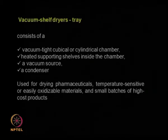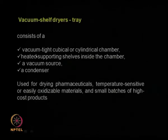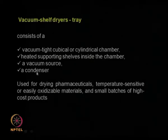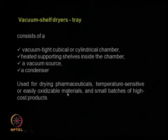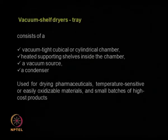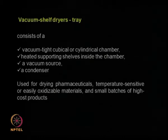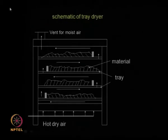Let us look at the vacuum shelf dryer, also called a tray dryer. You have a shelf and many trays inside — the chamber could be cubical or cylindrical. It is maintained airtight because you are applying a vacuum. There is a heating element and a vacuum source, and you need a condenser to collect whatever solvent or moisture evaporates. This is useful for drying pharmaceutical products; even temperature-sensitive products work very well. We can use it for oxidizable material because you are applying vacuum — there is no air inside, so there is no oxidation. We can do it in small batches.